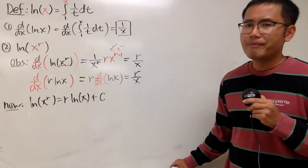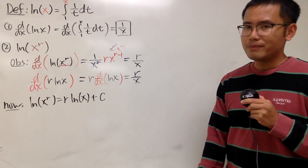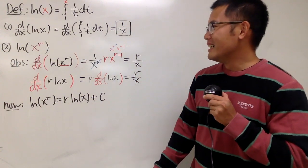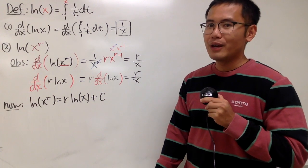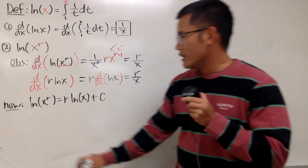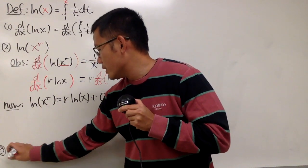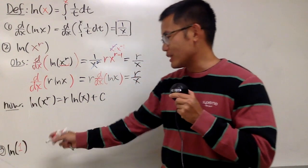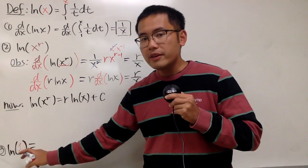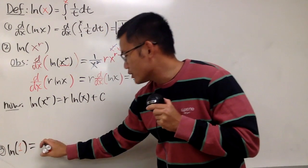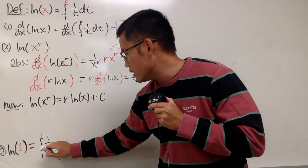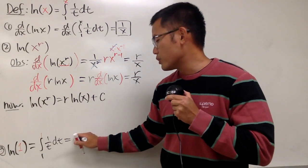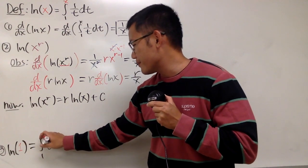How do we figure out the constant? Just plug in a value for x. But first, we need a value of natural log that we know. Let's figure out what natural log of 1 is. Using the integral definition, we compute the integral from 1 to 1 of 1 over t, dt. The integral from 1 to 1 is nicely equal to 0. So ln(1) = 0.